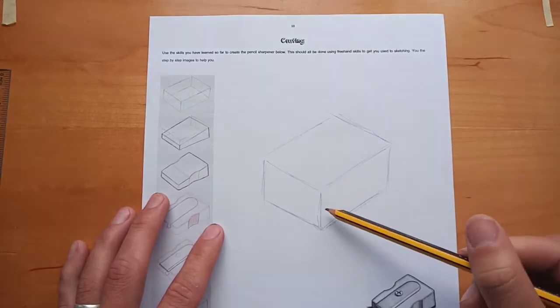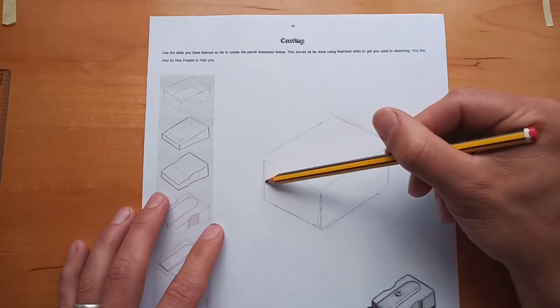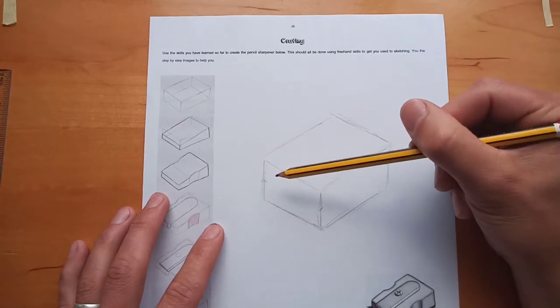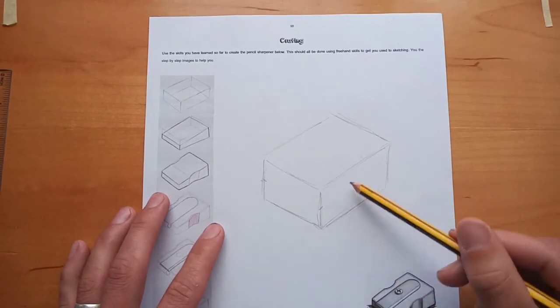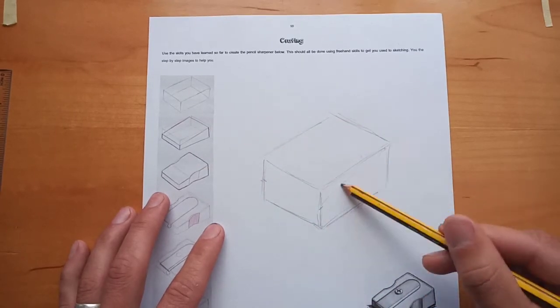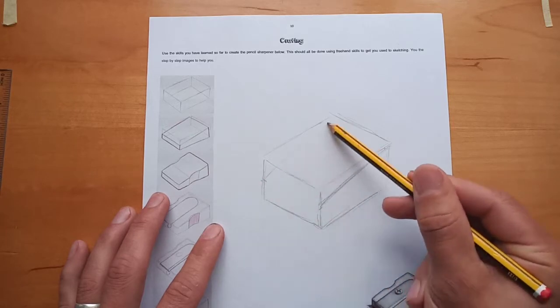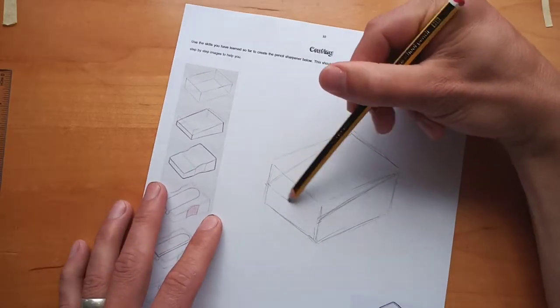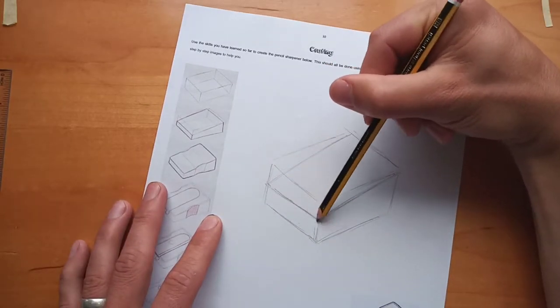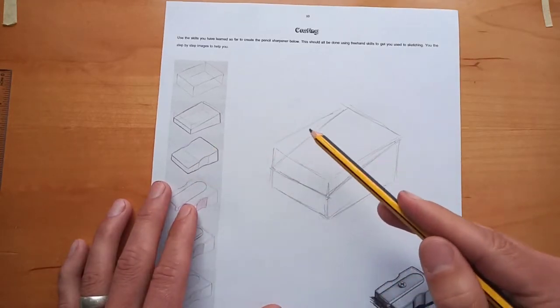From there, we're just going to roughly divide it up. So I'm going to come about half way down this line here. Half way down this line here. And that's going to give us the angled section across the top there. So I'm just going to draw in the angle. Again at the back. Drawing the angle. Then sketch across the front there. So that's starting to give us the shape.